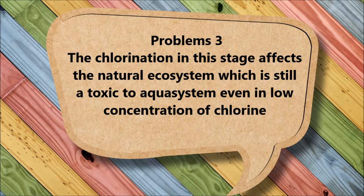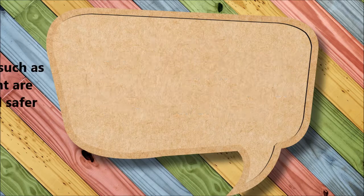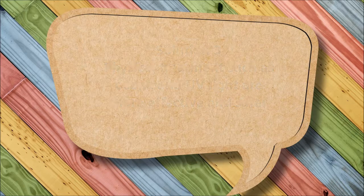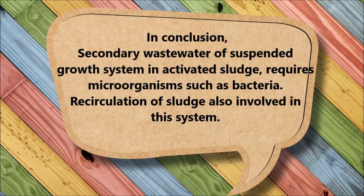Lastly, chlorination at this stage affects the natural ecosystem, as even low concentrations of chlorine are still toxic to aquatic systems. Physical treatments such as ozone and ultraviolet light, which are more effective and safer, are suggested as a better solution.